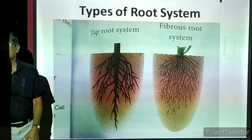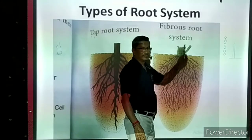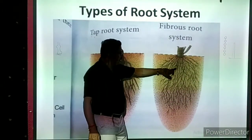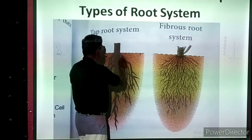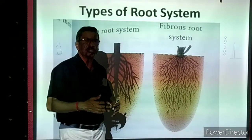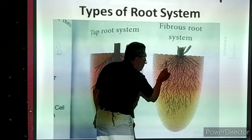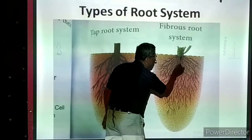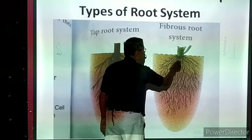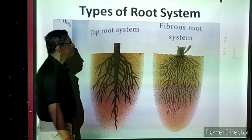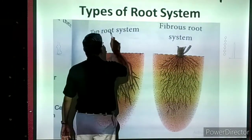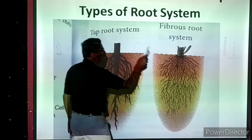In the fibrous root system, there is no primary root. Instead, an enormous number of thin, thread-like roots — maybe 50, 60, 70, 100, or 200 — arise from the base of the main stem. When all thin roots arise from the base of the main stem, the whole system is called the fibrous root system. Dicot plants have the tap root system; monocot plants have the fibrous root system.